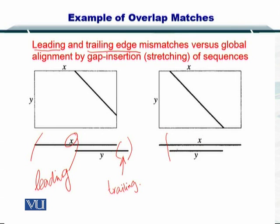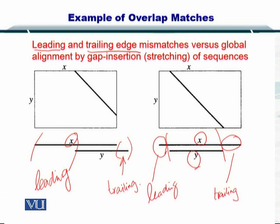Similarly, there can be a situation where a sequence, in this case Y, is contained within X. Therefore, X has a leading as well as a trailing edge. Such alignments need to be considered by creating a modification in the traceback strategy.